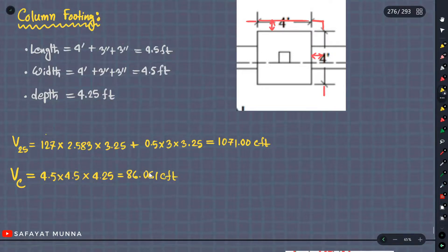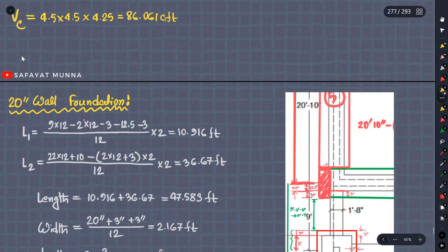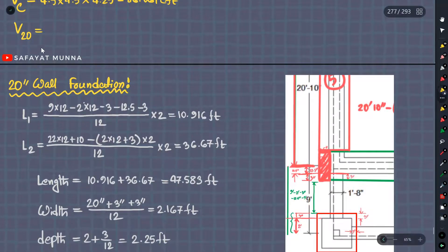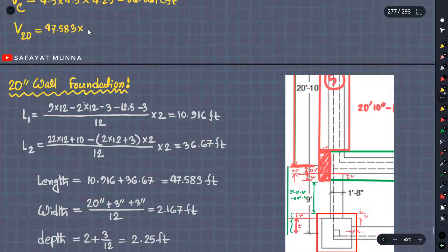4.5 into 4.5 into 4.5 into 4.25 — that gives 86.061 CFT. And for the last one — 25-column — so V20 is here. Length = 47.583, width = 2.167, depth = 2.25.